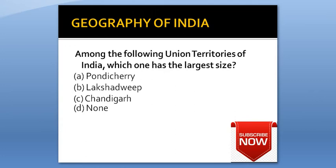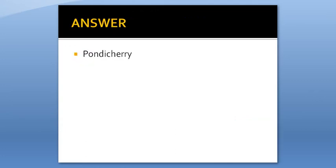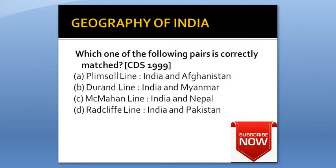Among the following Union Territories of India, which one has the largest size? Option A: Pondicherry. Option B: Lakshadweep. Option C: Chandigarh. Option D: None of the above. Answer is Pondicherry.